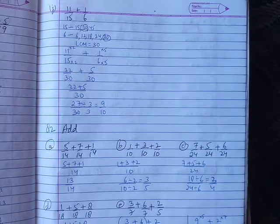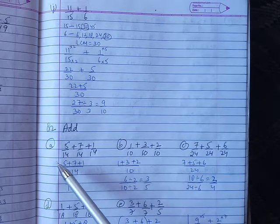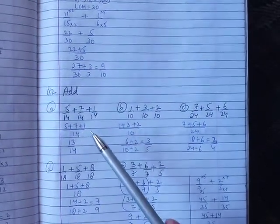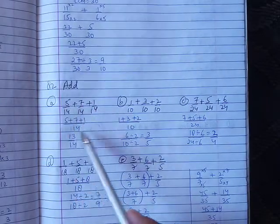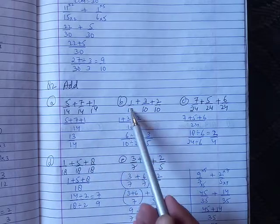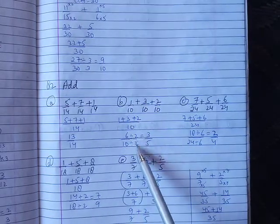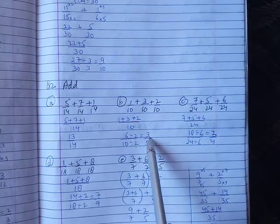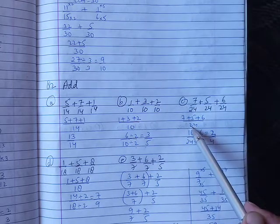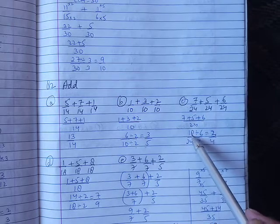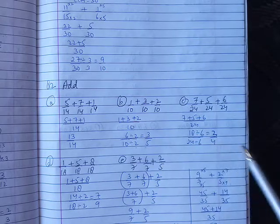Question number 2: fractions with mixed numbers. Question 1 was about fractions. Like fractions with denominator 14: plus 1 plus 3 plus 2 gives 6 by 10. Divide by 2: 2 into 6 and 2 into 10 gives 3 by 5. Part b: 6 by 24. Divide by 6 to get 3 by 4 as the answer.